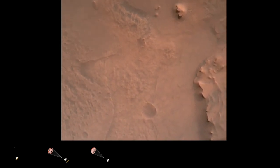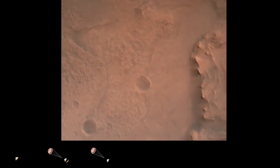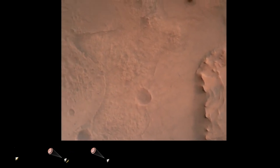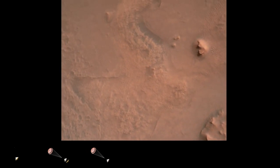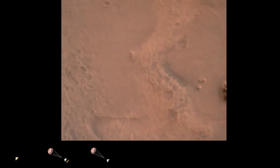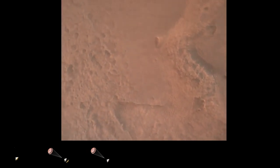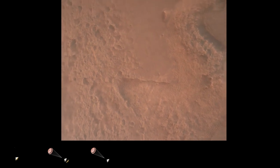Perseverance is continuing to descend on the parachute. We are coming upon the initialization of terrain relative navigation and subsequently the priming of the landing engines. Our current velocity is about 90 meters per second at an altitude of 4.2 kilometers.